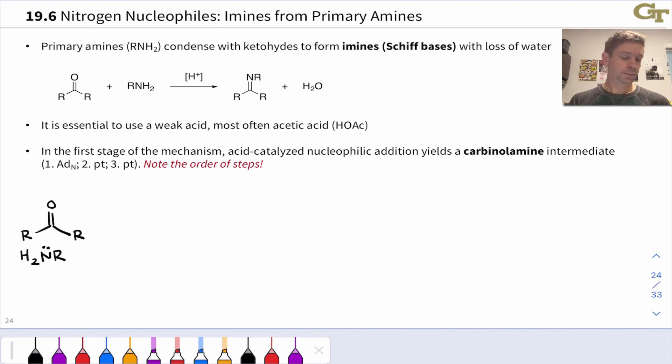The punchline for primary amines is right here at the top of the slide. Primary amines condense with ketones and aldehydes to form what are called imines, also known as Schiff bases. A water molecule is lost, so this is analogous to acetal formation, but recall in that reaction we ended up with two C-O single bonds. In this reaction we end up with a C=N double bond.